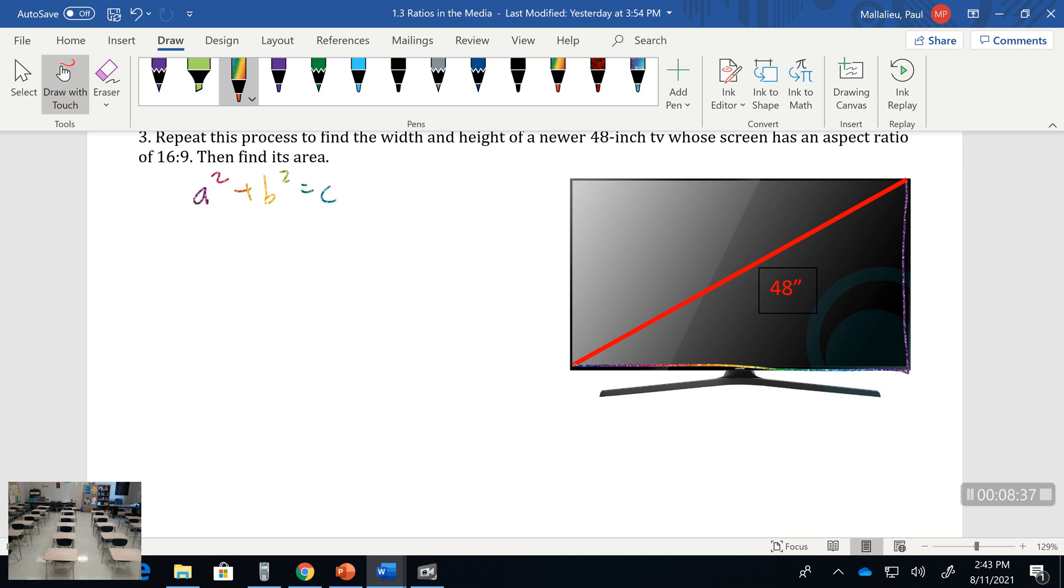We know that our c is 48. We don't know our a and our b, but we do know our aspect ratio of 16 to 9, so we can plug that in.